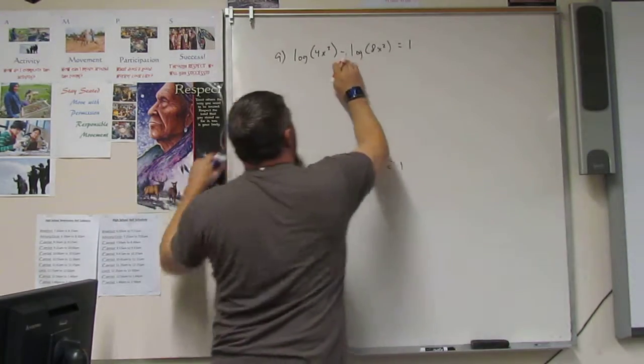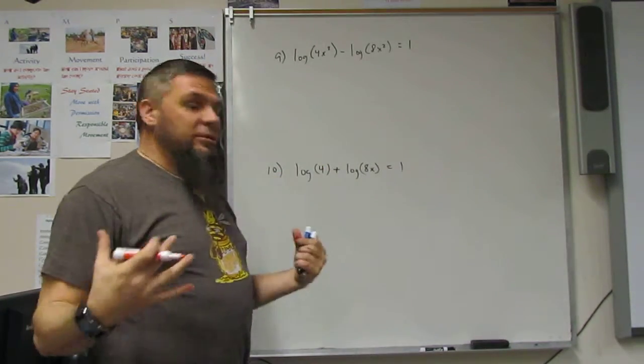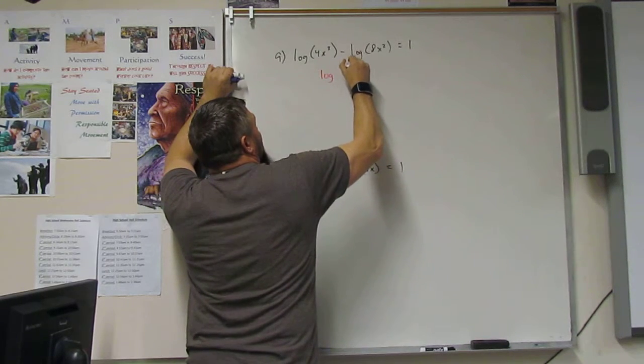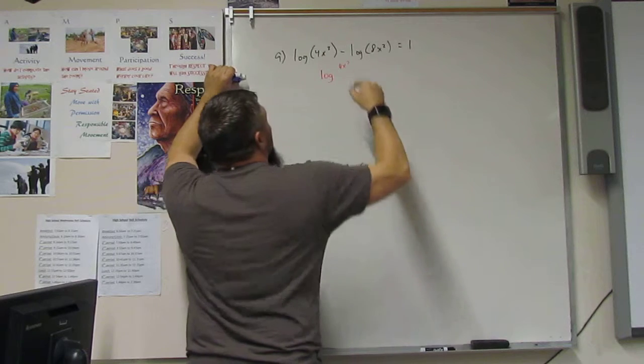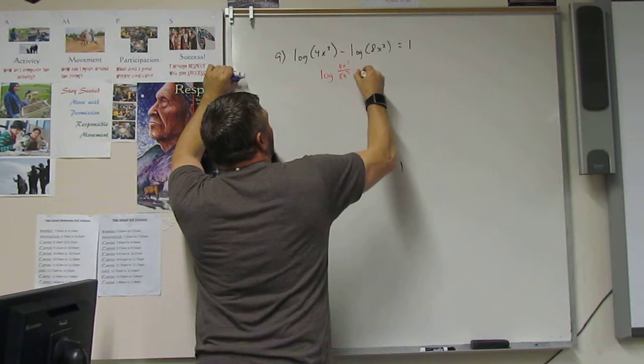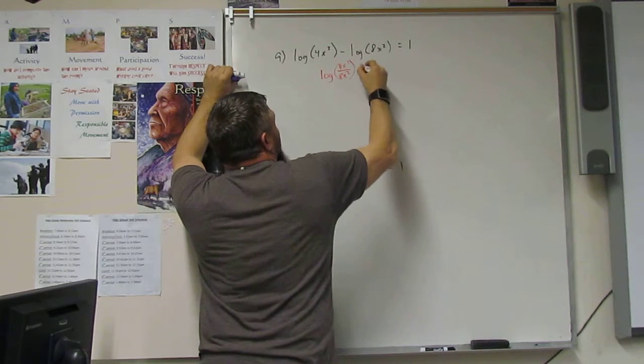Subtraction means division. So, log of 4x cubed divided by 8x squared is equal to 1.